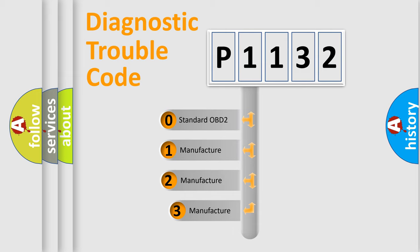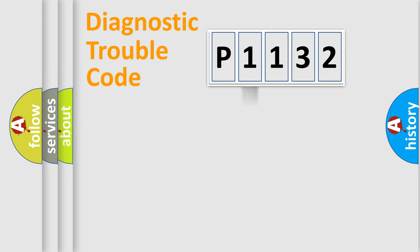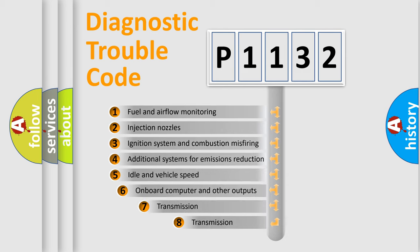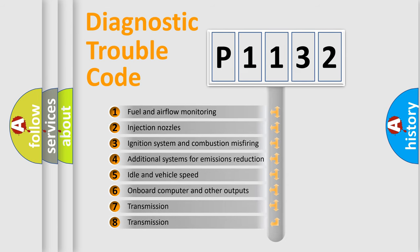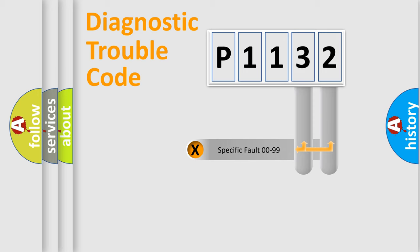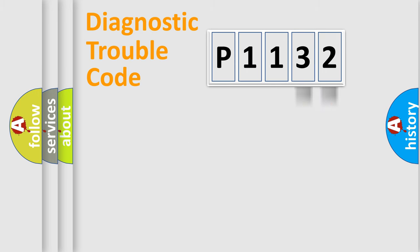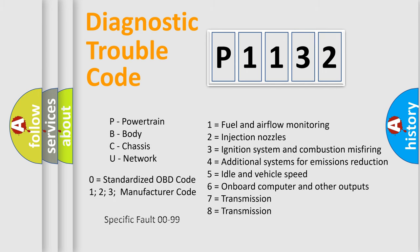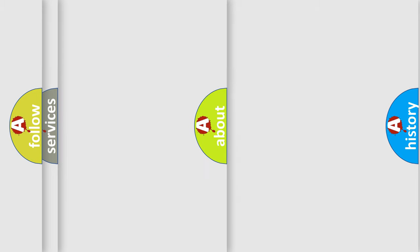If the second character is expressed as zero, it is a standardized error. In the case of numbers 1, 2, or 3, it is a manufacturer-specific error code. The third character specifies a subset of errors. This division is valid only for the standardized DTC code, and only the last two characters define the specific fault of the group.